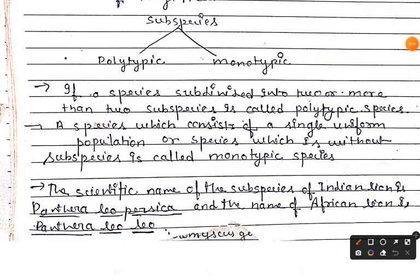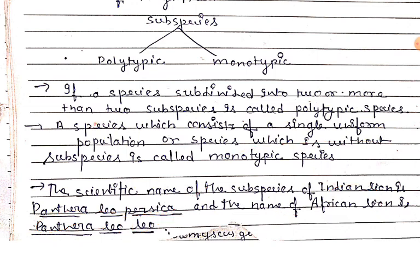The scientific name of the sub-species of Indian lion is Panthera leo persica, and the African lion is called Panthera leo leo. This is how we call them sub-species — when one species is adopted in another geographical area, the characters adapt to that area and the phenotypic character changes, but they are still able to interbreed, so we call them sub-species.